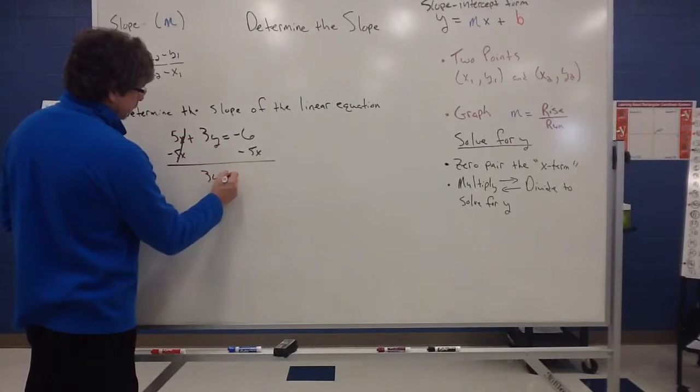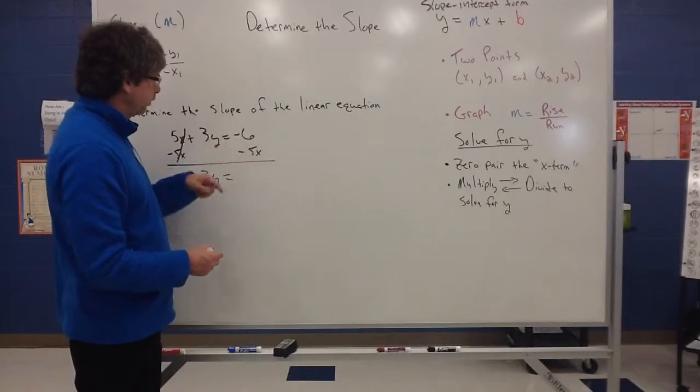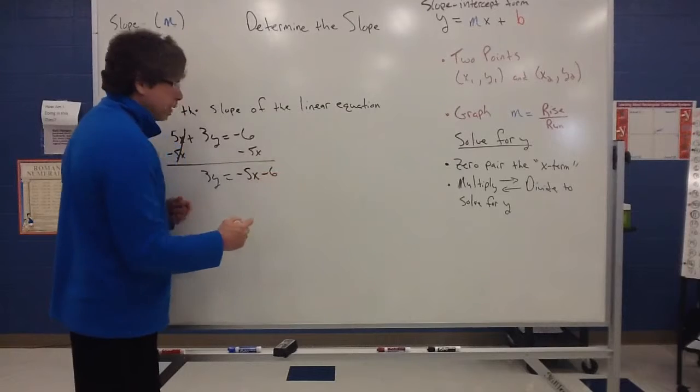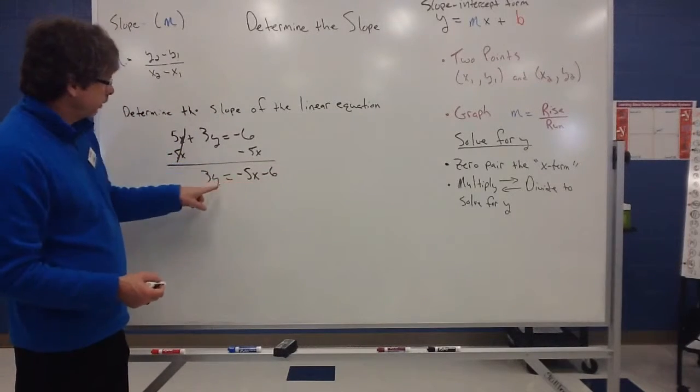I have 3y is equal to... These aren't actually like terms. So a negative 5x and a negative 6 just stays as a negative 5x and a negative 6. I can't really put those together. They're not like terms. So I've zeroed out. I've got this.